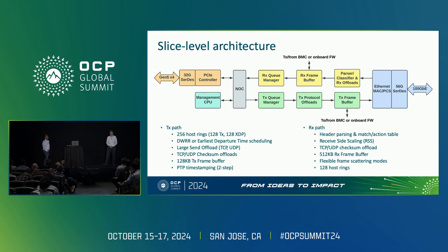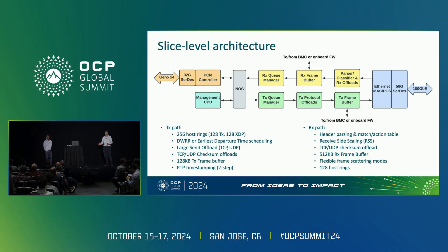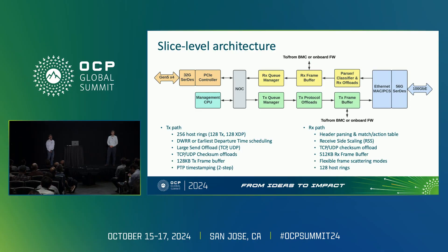Diving down to the slice level, I'll focus on the green transmit path first. The device has support for 256 host rings. By default, 128 are for traffic from the local server, and the other 128 are used for receive-to-transmit forwarding using Express Data Path. Descriptors have 8 bytes of descriptor granularity, so you can stack them together for optimal bus use for short versus long frames. Frames are scheduled using byte-aware deficit weighted round robin, with an optional overlay for earliest departure time scheduling — where a timestamp in the descriptor is compared against the local PTP timestamp reference to decide whether the frame is eligible to be scheduled.